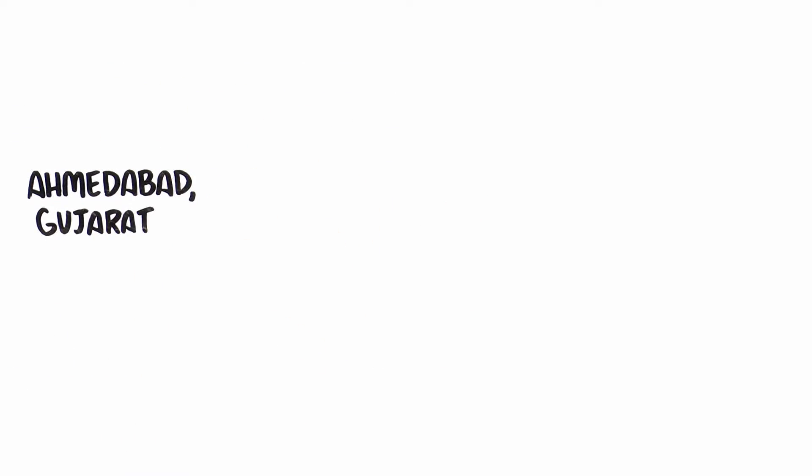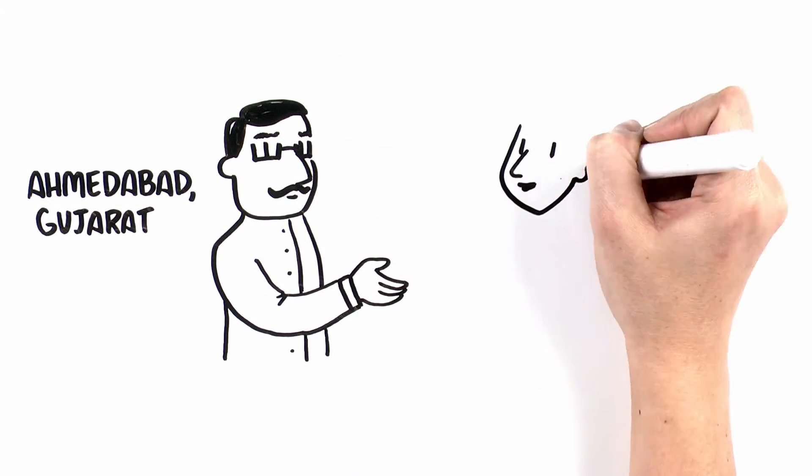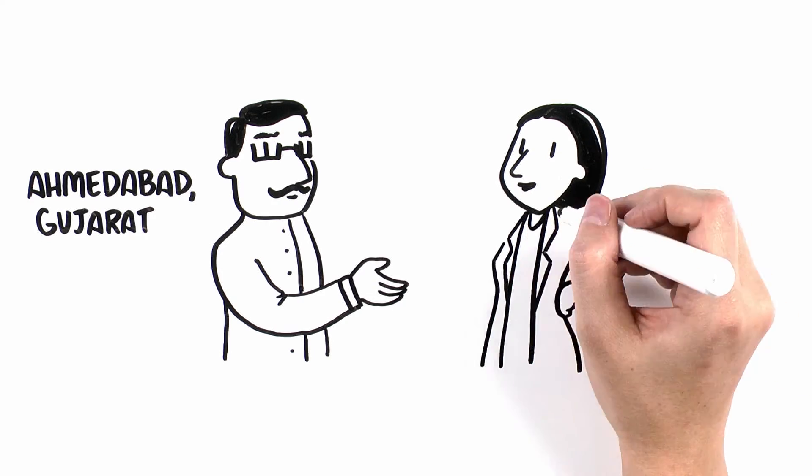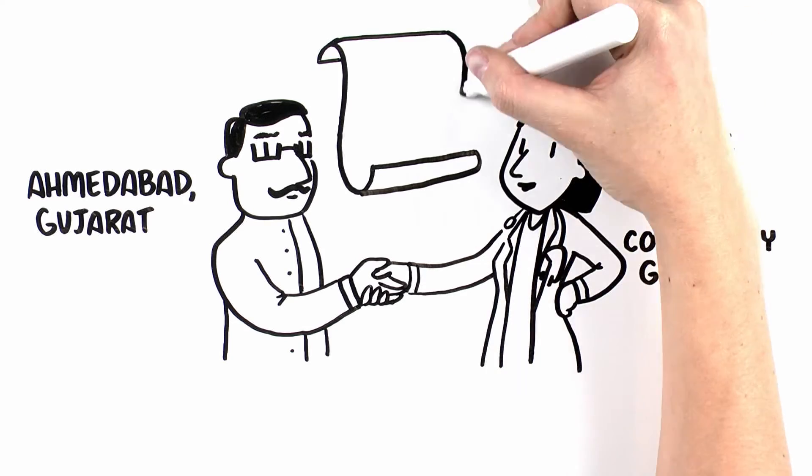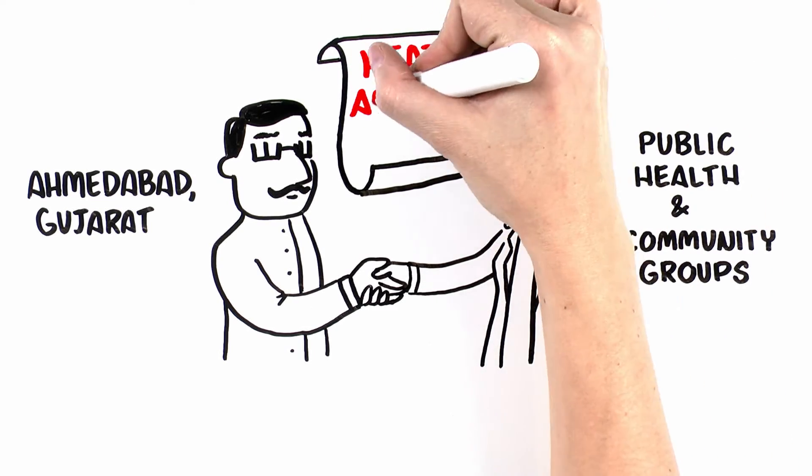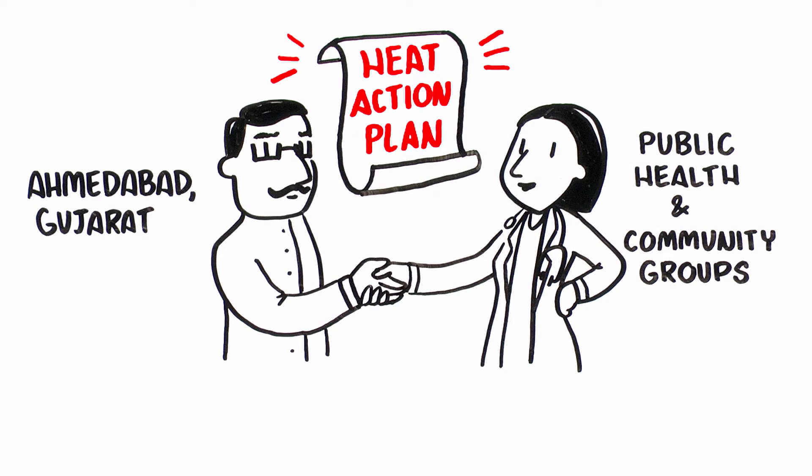For example, in India, the city authorities in Ahmedabad in Gujarat State partnered with public health agencies and community groups to prepare for extreme heat. Informed by climate science, the partnership developed a heat action plan detailing an early warning and response system.